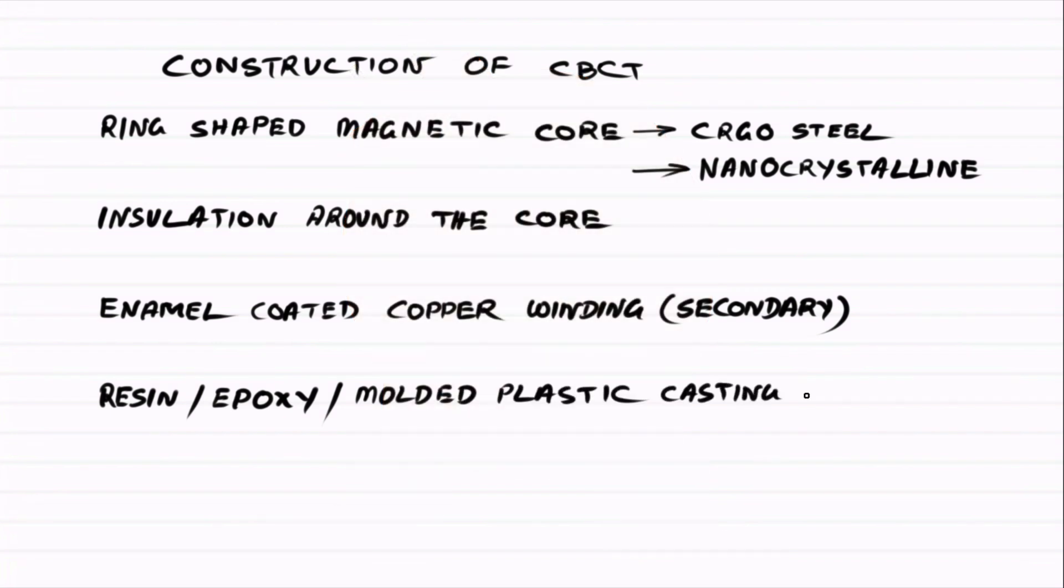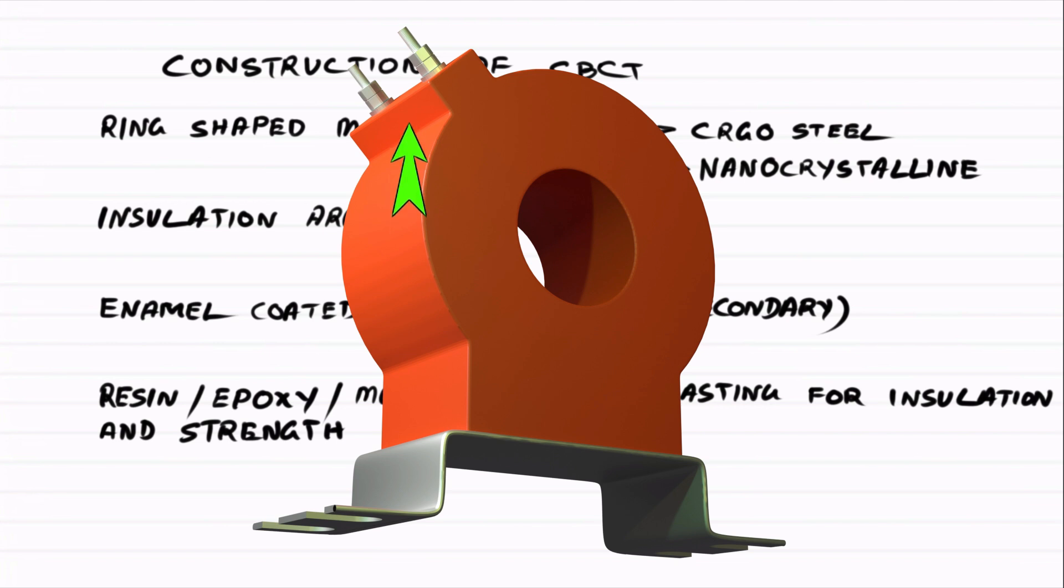This gives strength and insulation. The secondary terminals come out through a terminal block, which we use to connect the external earth fault relay.